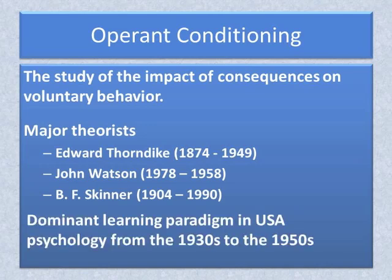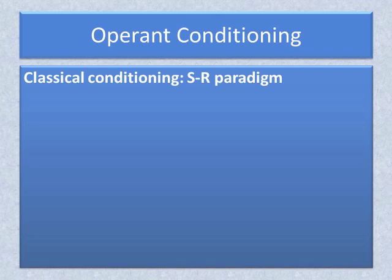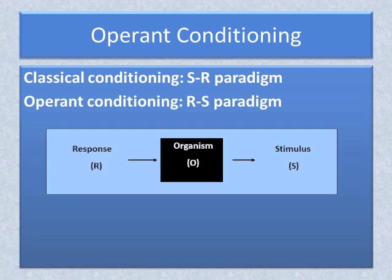Behaviorism, especially operant conditioning theory, was the dominant psychology paradigm in the USA from the 1930s through the 1950s. In Europe, the dominant paradigm was the psychodynamic paradigm of Freud and his colleagues. All behavioral theories are in the S-R stimulus-response paradigm in that they investigate the supposed direct connection between stimuli and responses. However, operant conditioning might more readily be considered an R-S paradigm, in that the stimulus following a voluntary response will change the likelihood that the response will occur again. The organism is still considered a black box because what goes on inside the organism is not considered when describing learning.